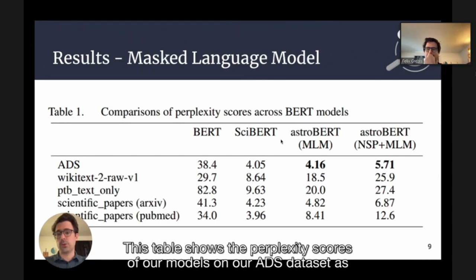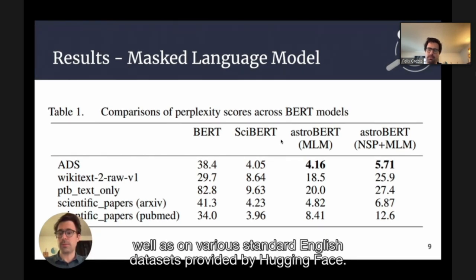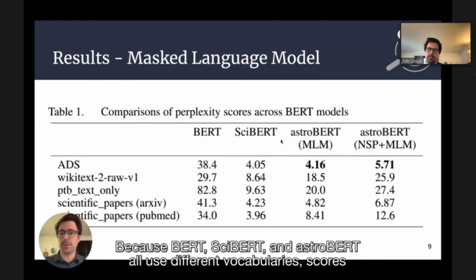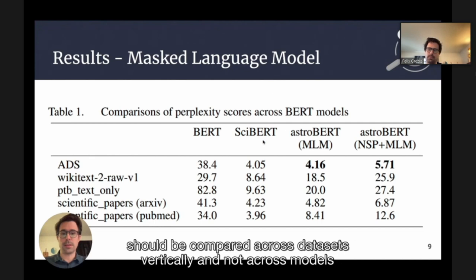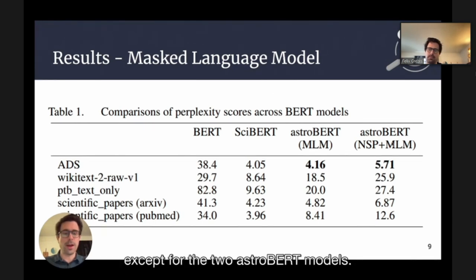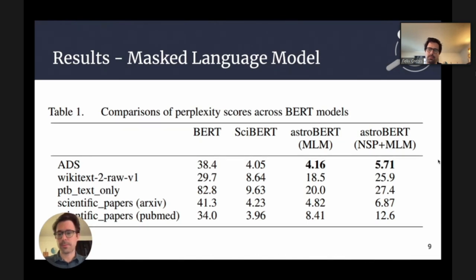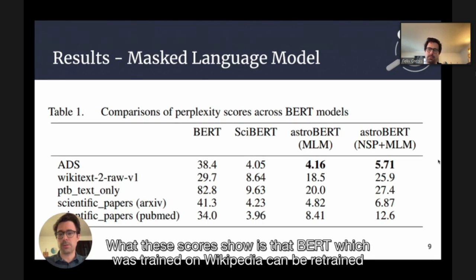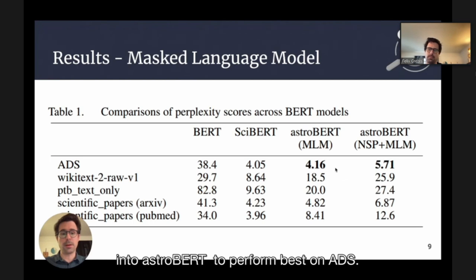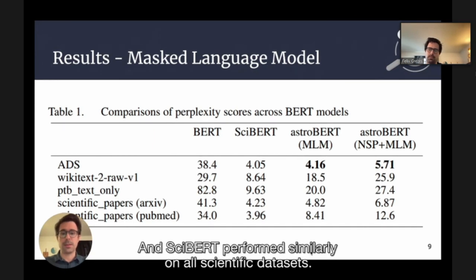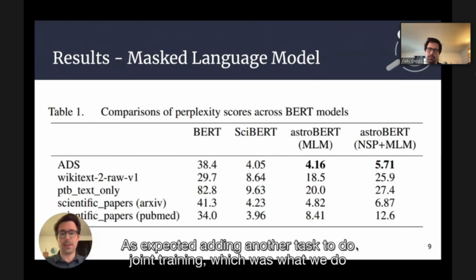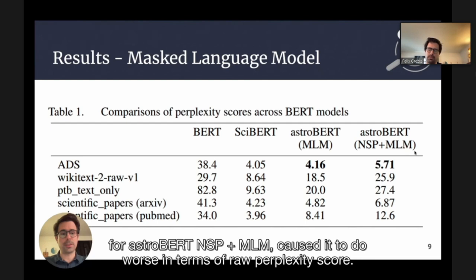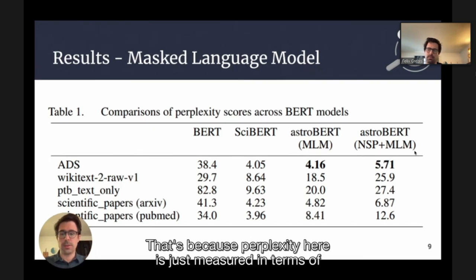Here are the first results. This table shows perplexity scores of our models on our ADS dataset as well as on various standard English datasets provided by Hugging Face. Because BERT, SciBERT, and AstroBERT all use different vocabularies, scores should be compared across datasets vertically, not across models — except for the two AstroBERT models, which share the same vocabulary. These scores show that BERT, retrained into AstroBERT, performs best on ADS. SciBERT performs similarly across all scientific datasets. Adding the NSP task in joint training causes AstroBERT NSP+MLM to do worse in raw perplexity, since perplexity is measured solely on the MLM task.